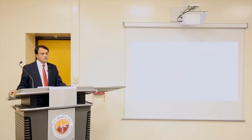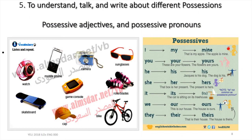Our next objective for these two weeks is that the students should be able to understand, talk, and write about different possessions. When they are talking about different possessions or items they have, they should be able to use different possessive adjectives and possessive pronouns. For example, our possession items could be our mobile phones, cameras, sunglasses, watch, skateboards, or anything we have in our house, in our life, in our college. To describe that if you have something, you use possessive adjectives. For example: this is my camera — my is a possessive adjective here. Or we can use possessive pronouns: whose camera is this? It's mine — mine is a possessive pronoun.